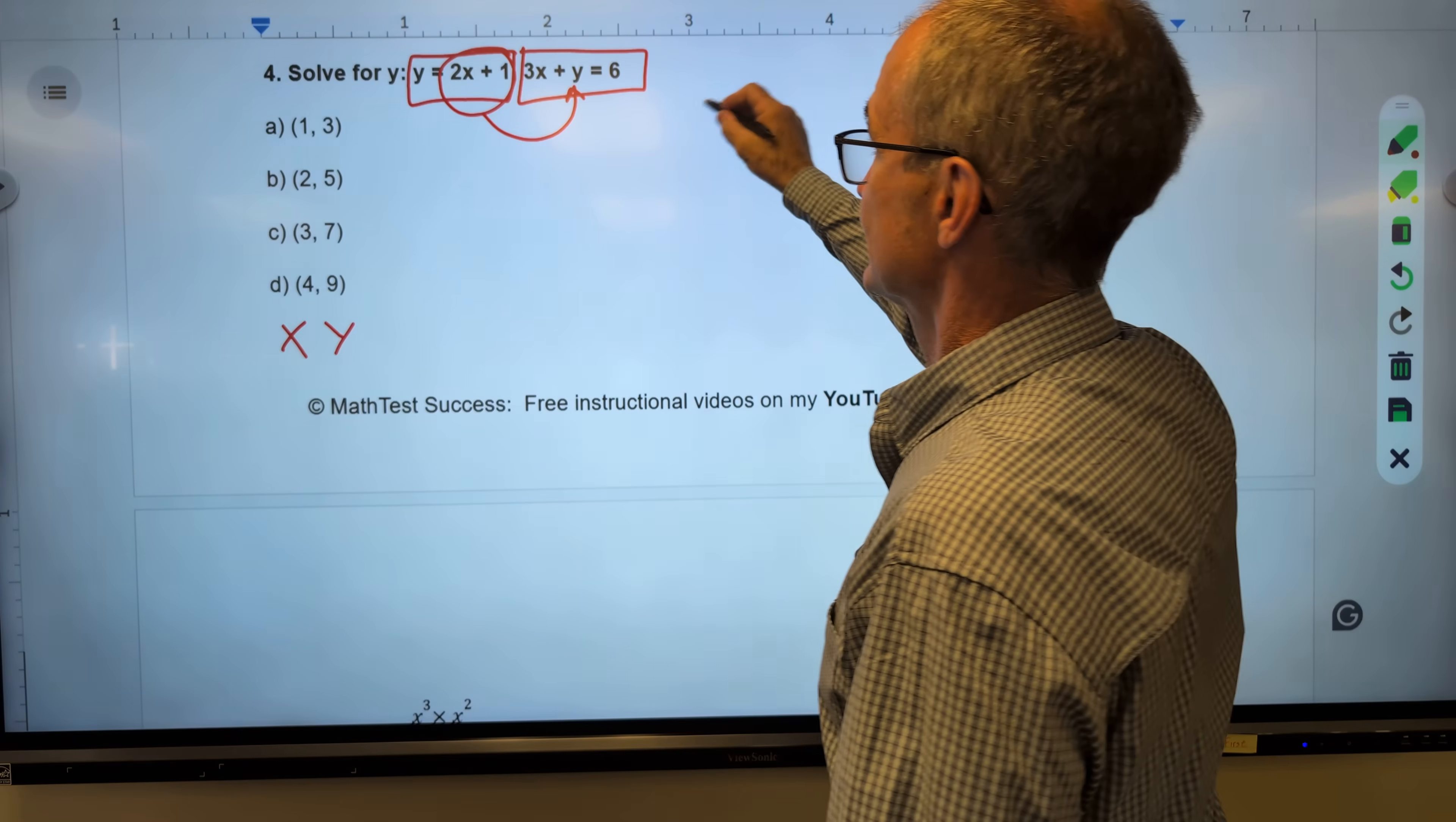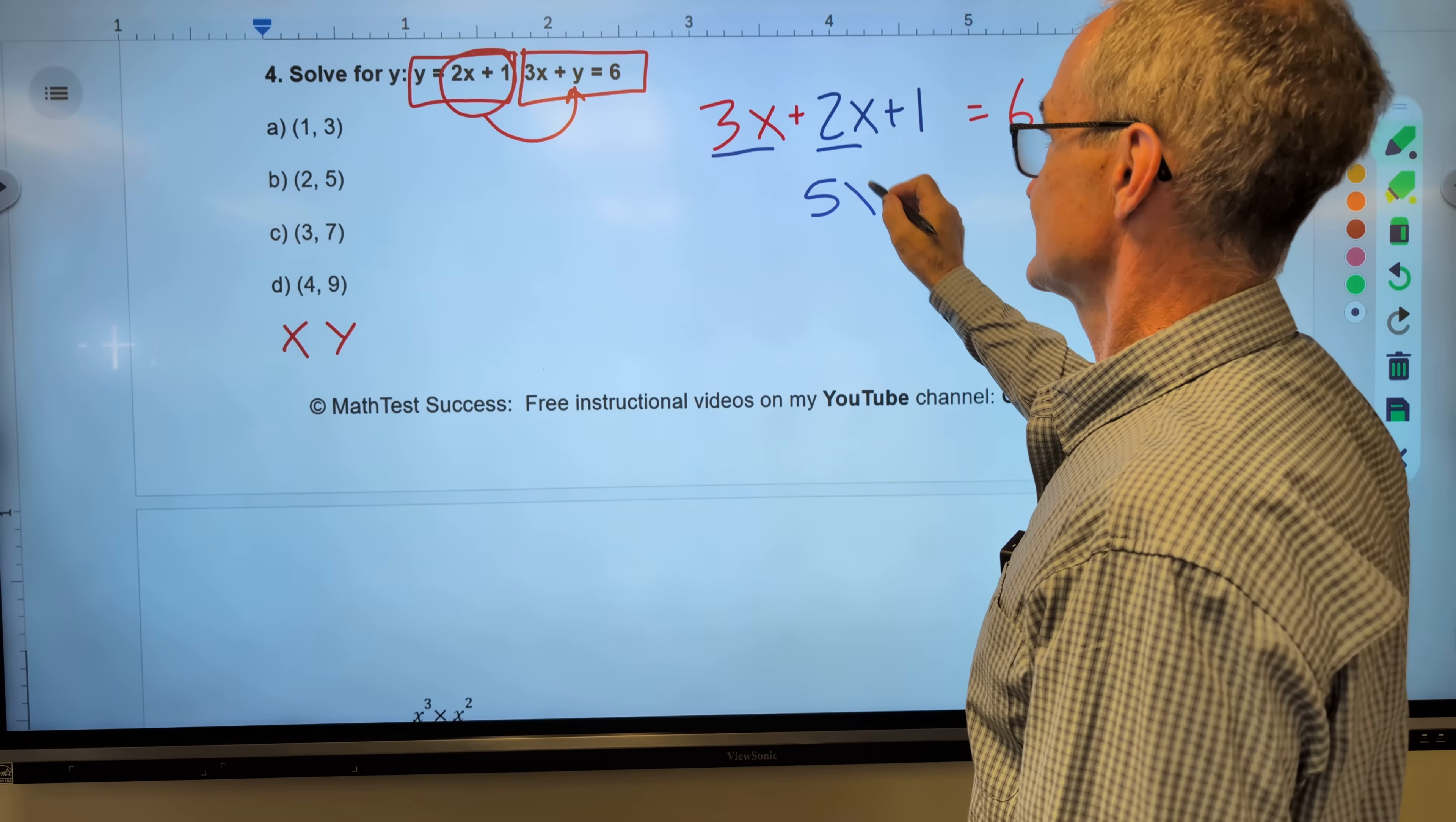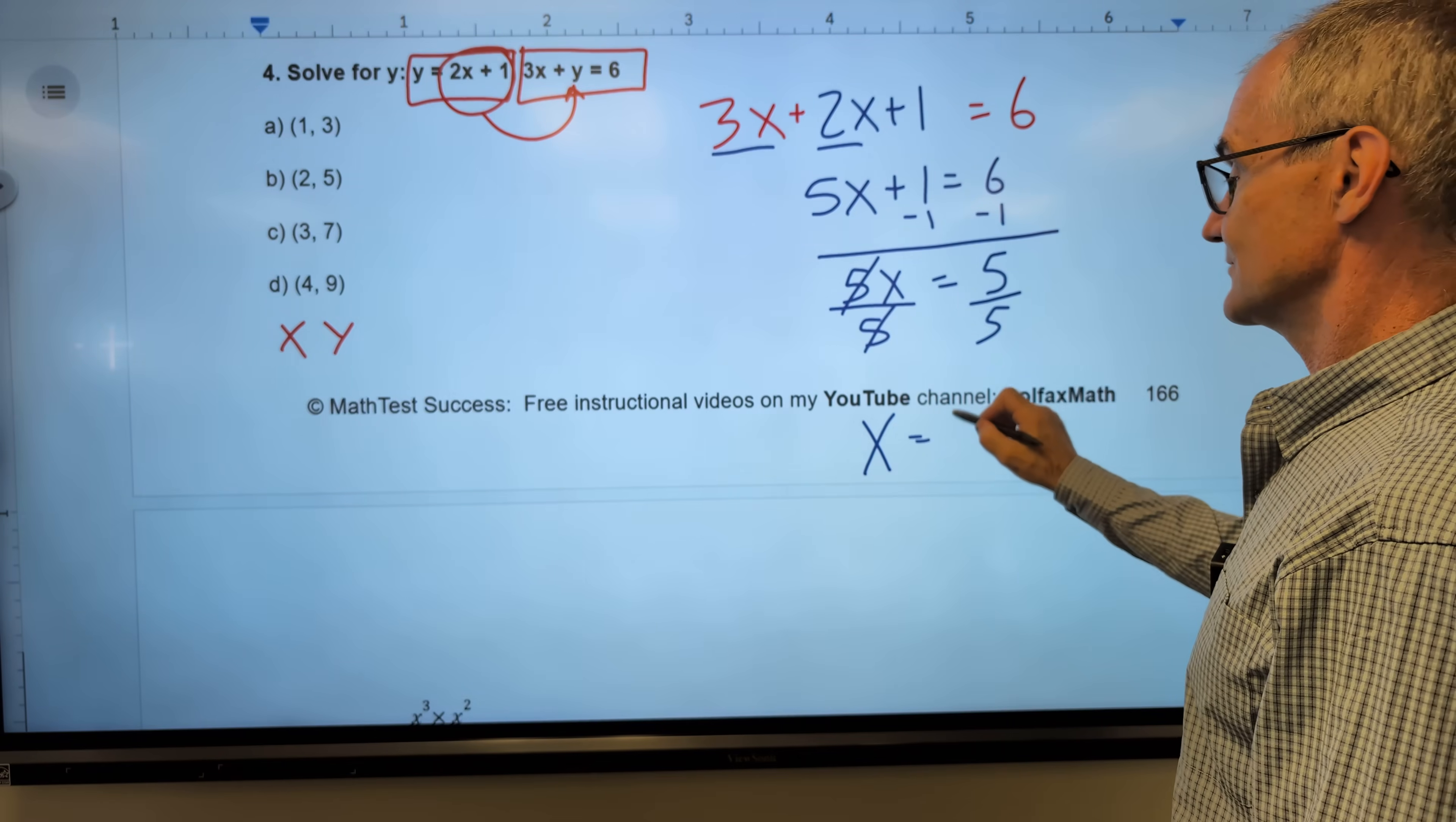I have 3x plus y is equal to 6. And then I am telling you that y is equal to 2x plus 1. Now I have one equation, one variable. I'm going to combine similar terms. 3x and 2x is 5x plus 1 equals 6. Subtract 1 from both sides. 5x equals 5. I reverse multiplication with division. 5 divided by 5 is equal to 1.